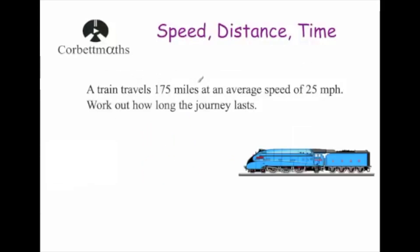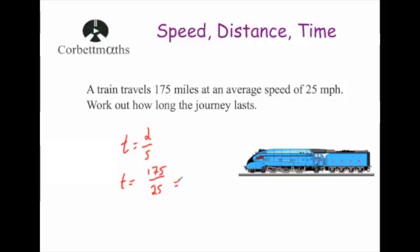A train travels 175 miles at an average speed of 25 miles per hour. Work out how long the journey lasts. We want to find time, so time equals distance divided by speed. Time equals 175 divided by 25, which equals 7 hours.